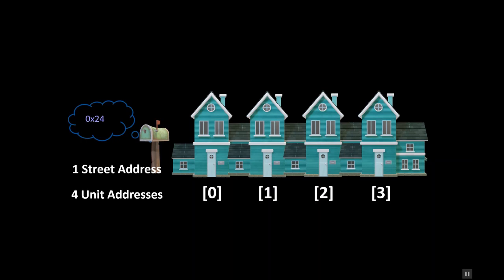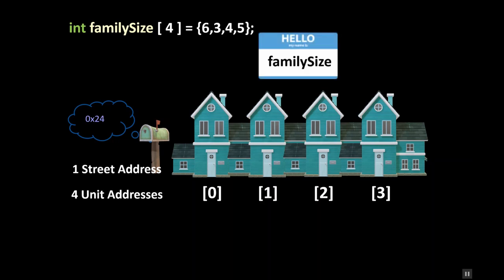Notice they start with zero and not one. That is intentional, and all array elements start with element zero. Notice in our example we are calling it family size. Because here we are going to record the number of family members that live in each unit. As you can see, the array syntax specifies the size of the array, or the number of its elements, in this case four.